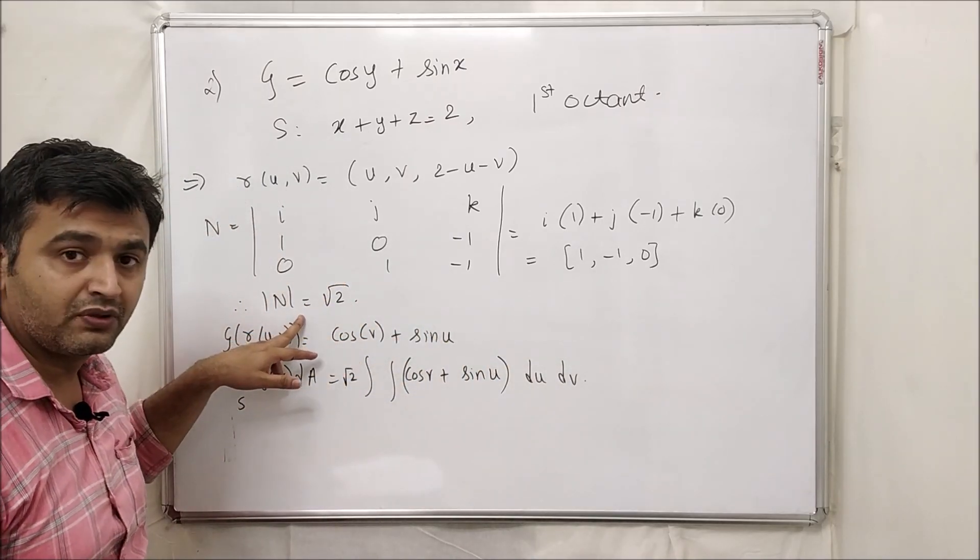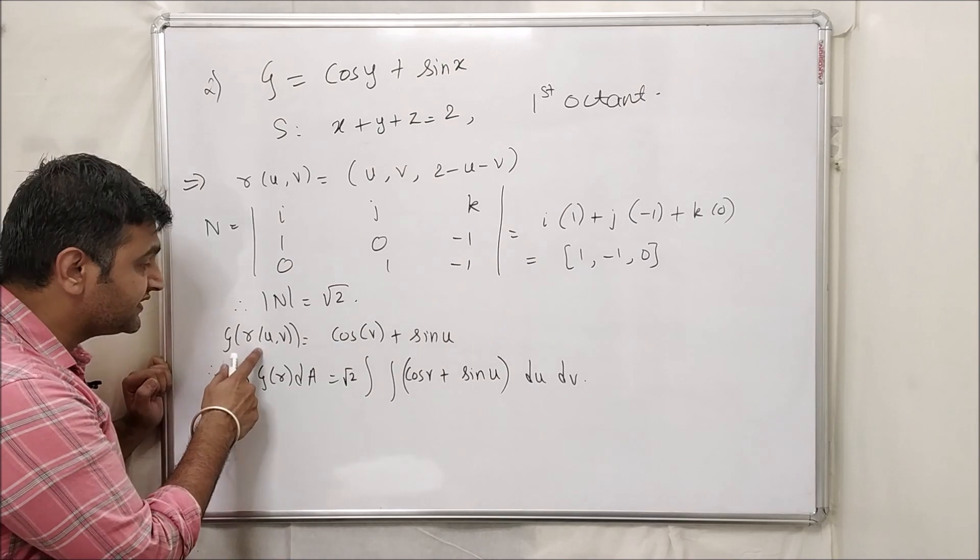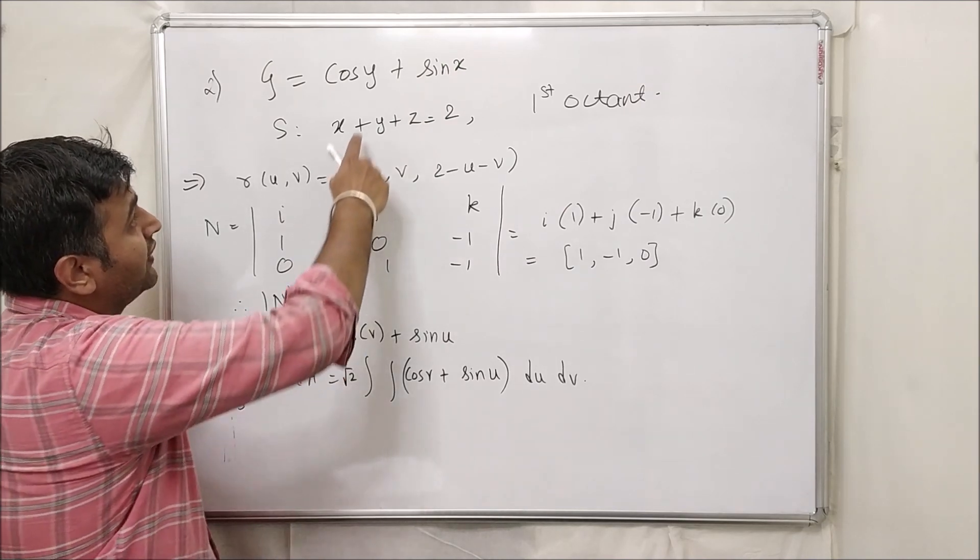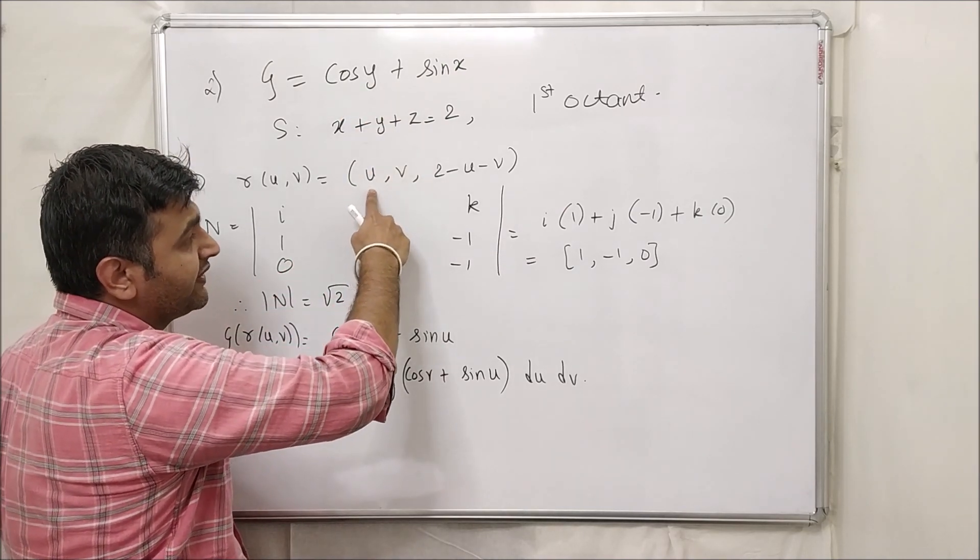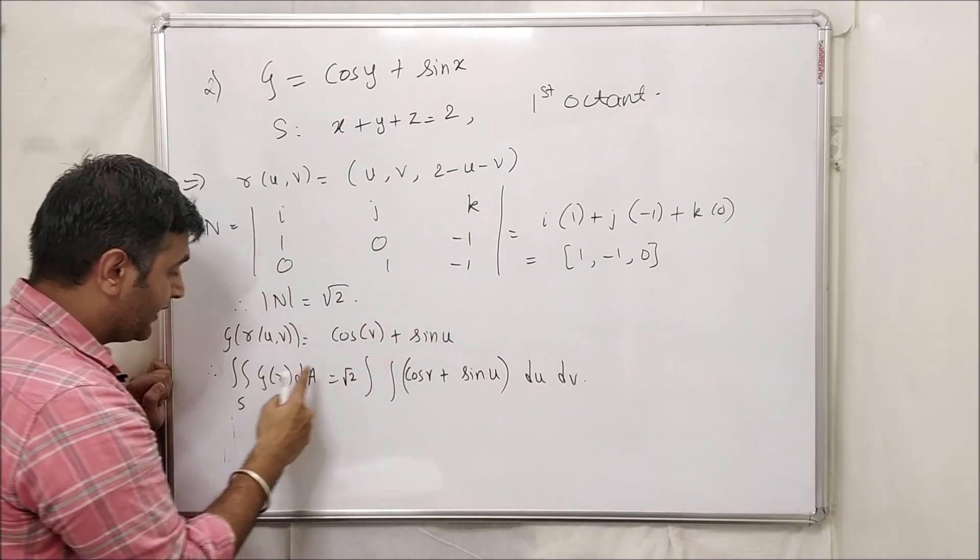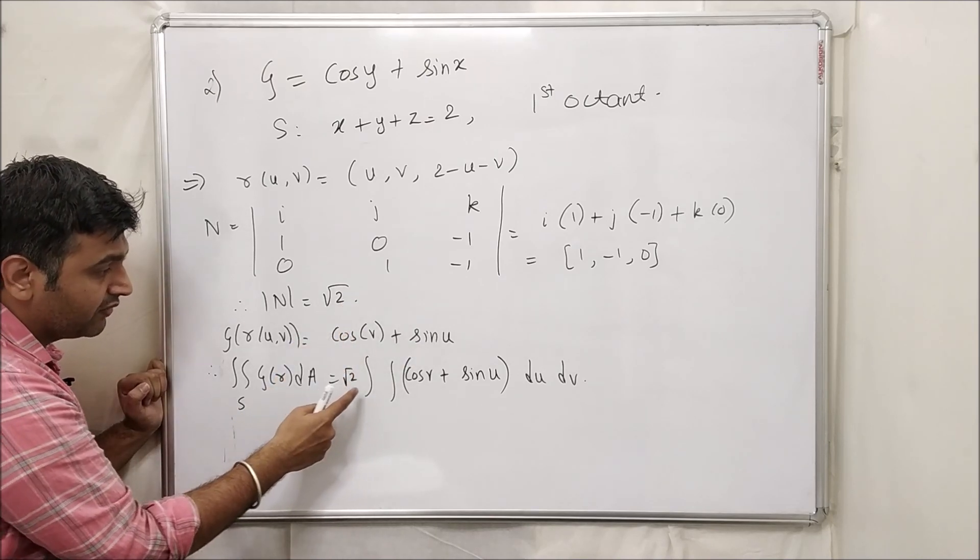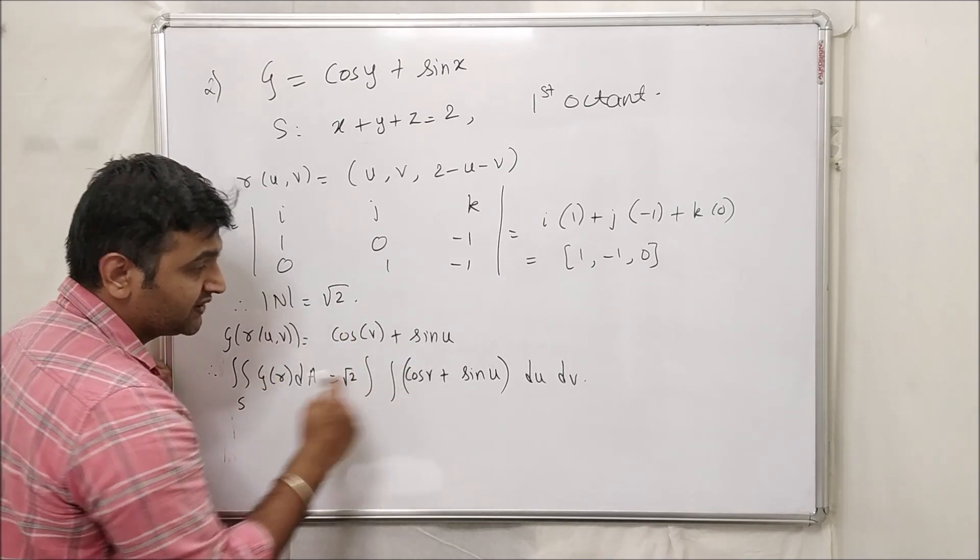And therefore absolute value of normal vector is root of 1 plus 1 which is root 2. Now you have this thing g of r of u is what? So wherever you have xyz you replace by u v 2 minus u minus v, so cos v plus sin u. And then if you take this, so you have this multiplied by mod n, which is nothing but you have root 2 into cos v plus sin u.